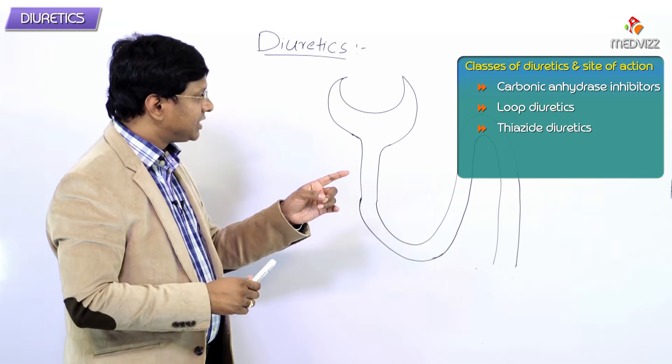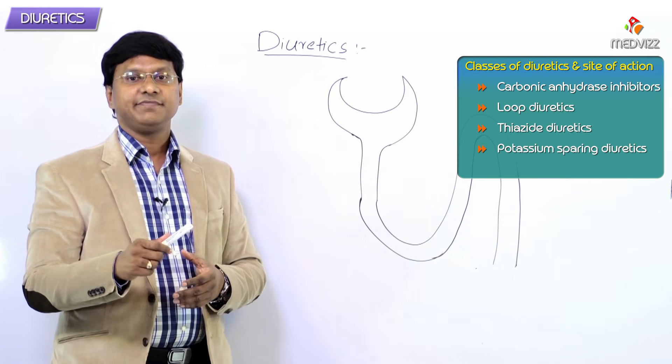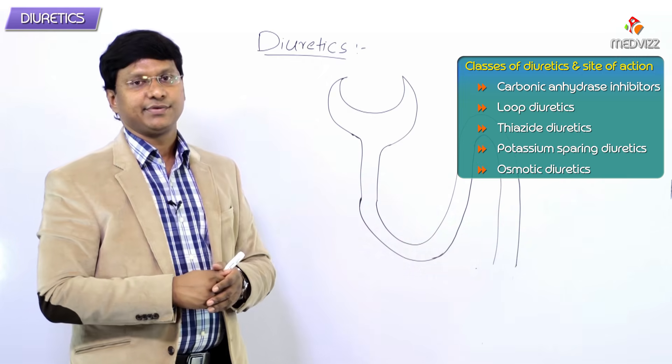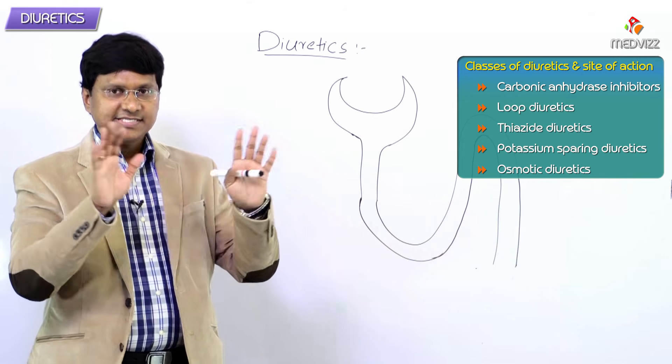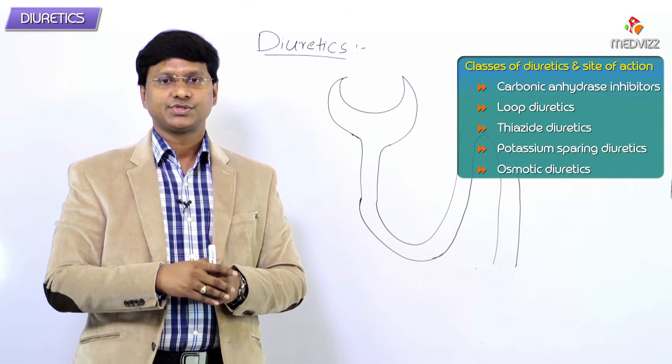Next we include the potassium-sparing diuretics, and lastly we have the osmotic diuretics. So these are the various classes of diuretics.